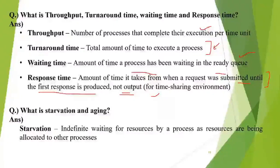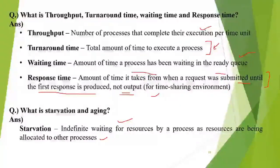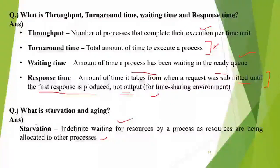Starvation is basically indefinite waiting by a process for resources, as resources are being allocated to some other process. For example, a process releases the CPU because it has to wait for some other resource that is occupied by another process. If that other process is not releasing the resource, the incoming process will have to indefinitely wait for it, and the process will go into starvation mode.